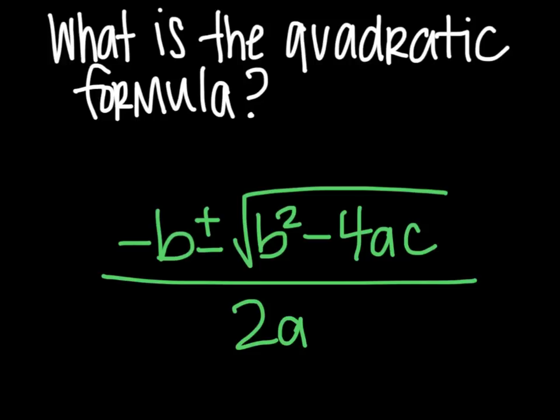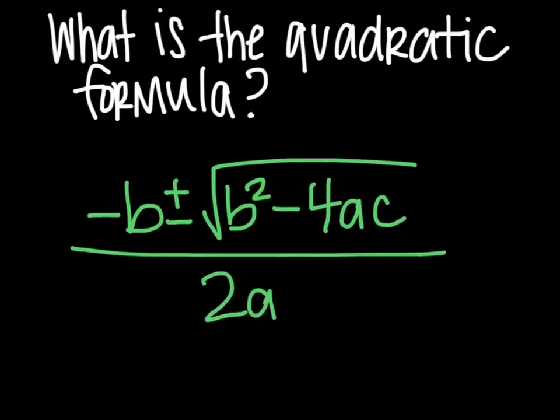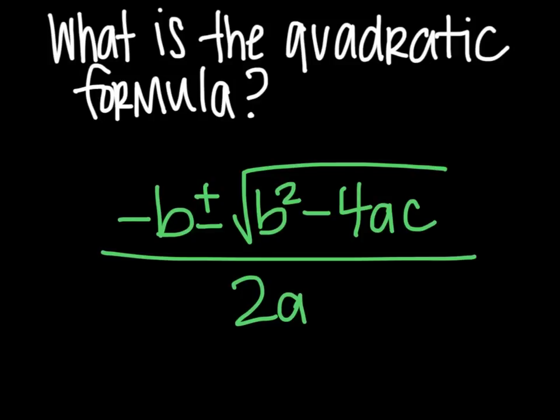First thing you need to know is what is the quadratic formula, and it is shown right here for you. It is the opposite of b plus or minus the square root of b squared minus 4 times a times c, all divided by 2a.